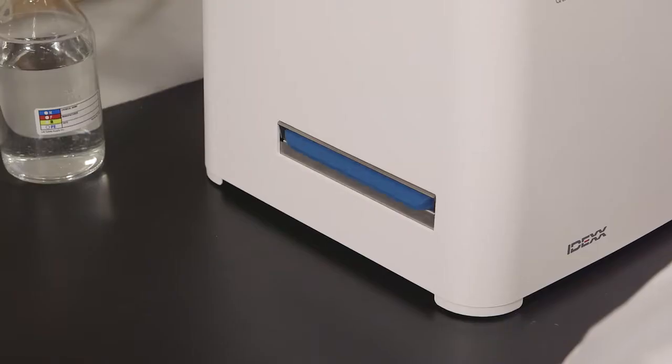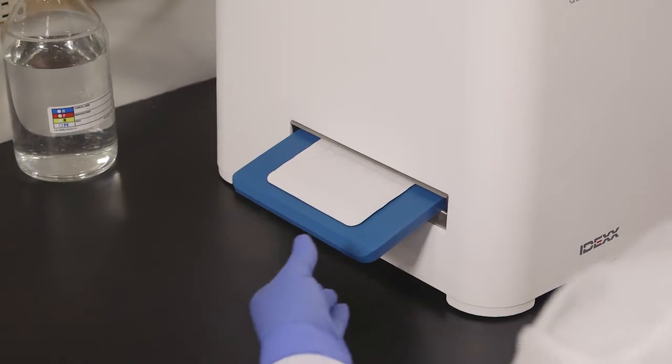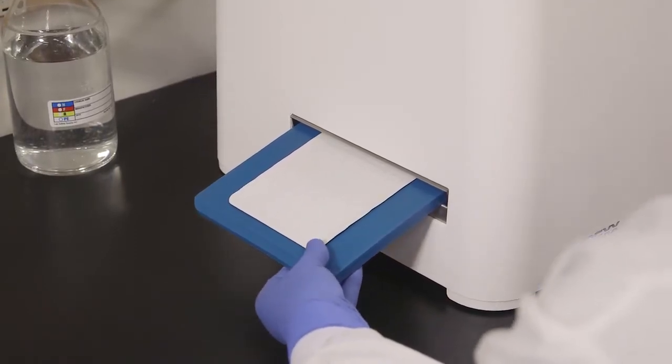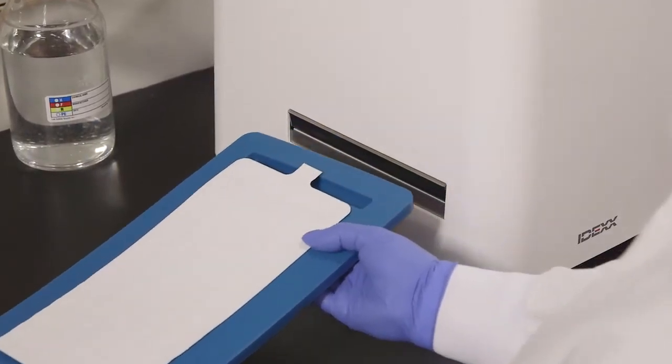The sealer distributes the sample mixture into the QuantaTray wells, seals the wells and partially ejects the sealed tray. Remove the rubber insert and tray from the sealer.